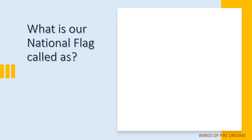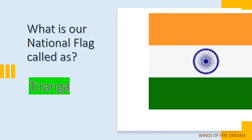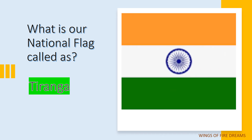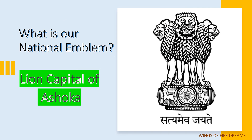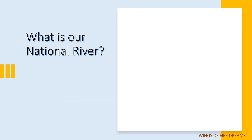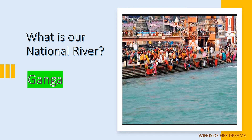What is our national flag called? Tiranga. What is our national emblem? Lion Capital of Ashoka. What is our national river? River Ganga.